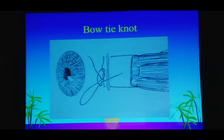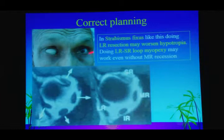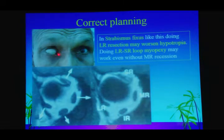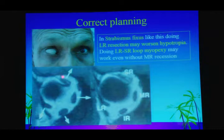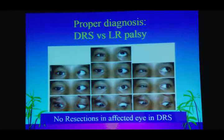It's important to identify the cause during planning. This esotropia with slight hypotropia — if you just do an MR recession and LR resection, it creates problems. The CT of the orbit shows the superior and inferior recti are in the medial compartment and the lateral rectus is in the inferior compartment. Strengthening it would worsen hypotropia. What's required is a loop myopexy of the superior and lateral rectus to bring them back into position — that is proper planning.